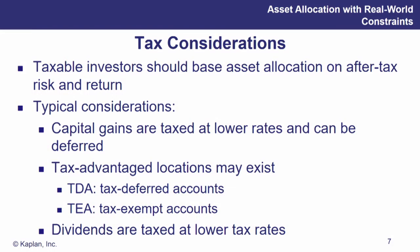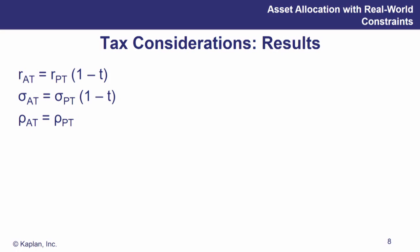Some considerations: capital gains are taxed at lower rates and can be deferred with a buy-and-hold approach. Tax-advantaged locations may exist — TDAs (tax-deferred accounts) and TEAs (tax-exempt accounts). Dividends are taxed at lower rates as well; in the United States, corporations owning preferred stock get a 70% tax exemption on those dividends. On an after-tax basis, the after-tax return equals the pre-tax return multiplied by (1 − T), and the after-tax standard deviation equals the pre-tax standard deviation also multiplied by (1 − T). Notably, this does not change the correlation at all — your after-tax correlation is the same as your pre-tax correlation.